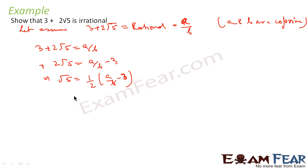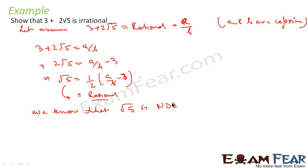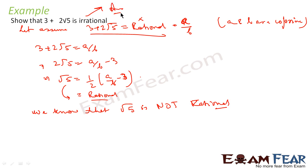But we know that √5 is not rational — √5 is irrational. Hence our assumption that 3 + 2√5 is rational is incorrect. What we did here: we assumed 3 + 2√5 is rational in A/B form, and then concluded that √5 would also be rational — but that is wrong, since √5 is irrational. Therefore 3 + 2√5 is irrational.